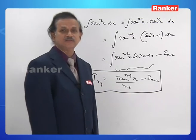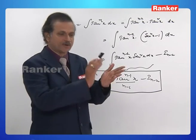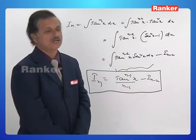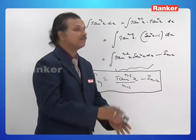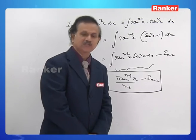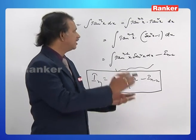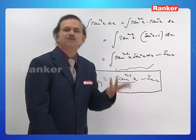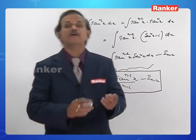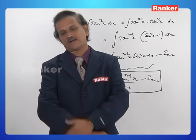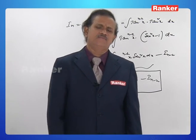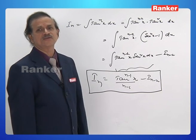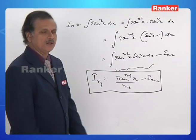For sin x and cos x, the splitting is sin^(n-1)x·sin x and cos^(n-1)x·cos x respectively. For tan x, it is tan^(n-2)x·tan²x. For cot x also, cot^(n-2)x·cot²x. For sec^n x, similarly, sec^(n-2)x·sec²x. You will be able to derive all reduction formulas using integration by parts.